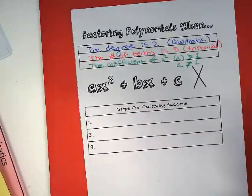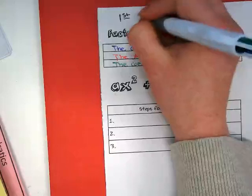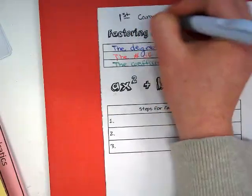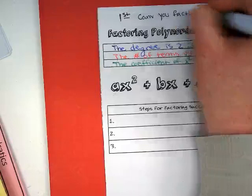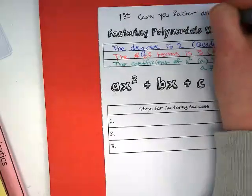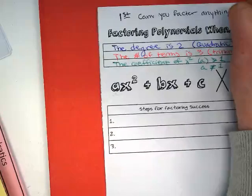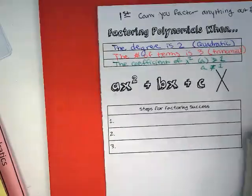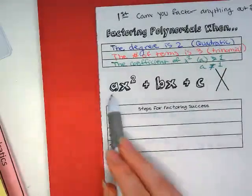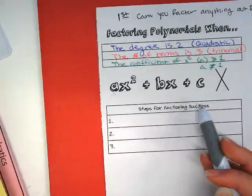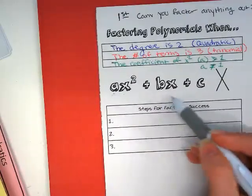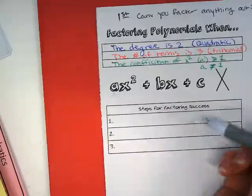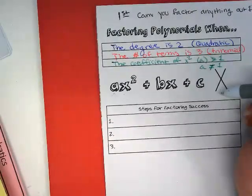So the first thing we always do when factoring polynomials is to look, can you factor anything else out? Especially when a is greater than 1, a, b, and c might share a common factor. And we can easily factor that out. And then we'll be left with x squared plus a different bx plus a different c. And we can use our normal x puzzle method to do that.